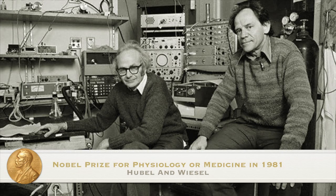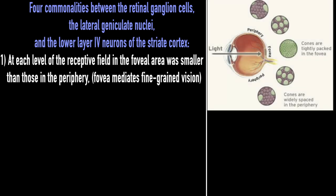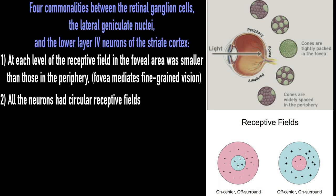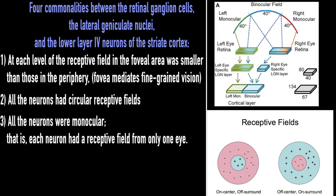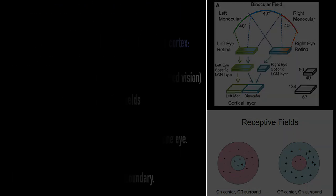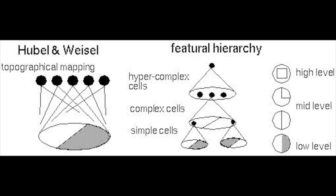A pair of neuroscientists, Hubel and Wiesel, in the 1950s discovered four commonalities between the retinal ganglion cells, the lateral geniculate nucleus and the lower layer four neurons of the striate cortex. 1. At each level of the receptive field in the foveal area was smaller than those in the periphery. Fovea mediates fine-grained vision. 2. All the neurons had circular receptive fields. 3. All the neurons were monocular. That is, each neuron had a receptive field from only one eye. 4. The receptive fields comprise an excitatory area and an inhibitory area separated by a circular boundary.